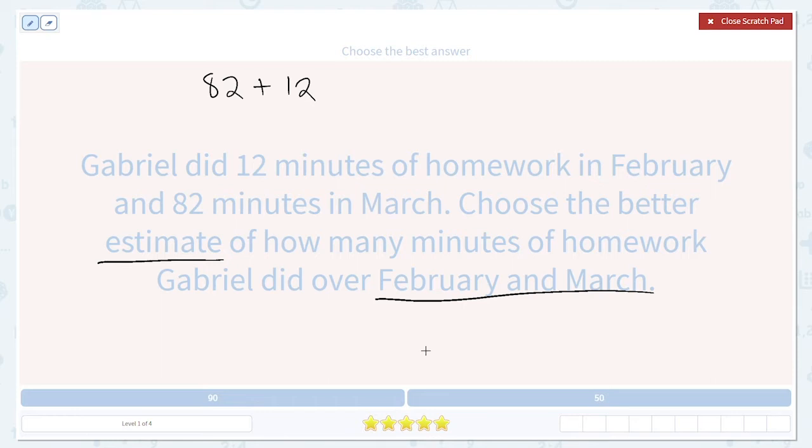Since it's asking for an estimate, we're going to round these numbers to the nearest 10. 82. Since two is less than five, we round down to the nearest 10, which is 80.